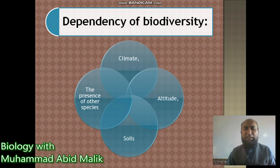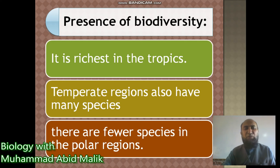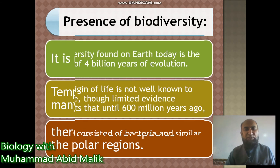Biodiversity depends on climate, altitude, size, and the presence of other species. Biodiversity is richest in the tropics. Temperate regions also have many species. There are fewer species in polar regions, of course, due to the cooling factor and lower temperatures.